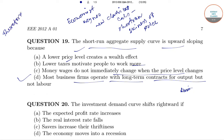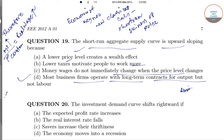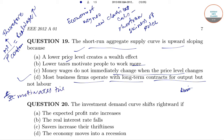Therefore, when the money wage increases and the price is constant, the real wage rises. As the real wage rises, it motivates the worker to work more and therefore shifts the aggregate supply curve. So, option C is the correct answer.